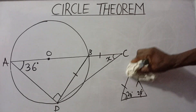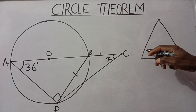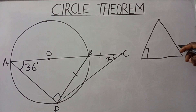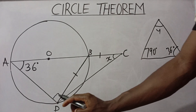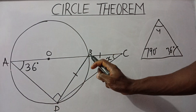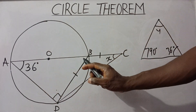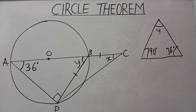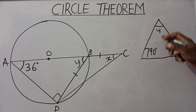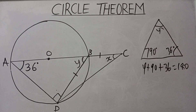Another thing to take note of: we are going to find angle x. If you have a triangle where one angle is a right angle and another is 36 degrees, then one angle is automatically 90 degrees by virtue of the diameter theorem. We also know that the sum of the interior angles of any triangle is equal to 180 degrees.